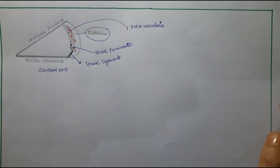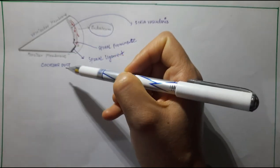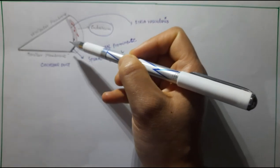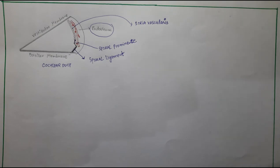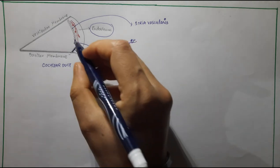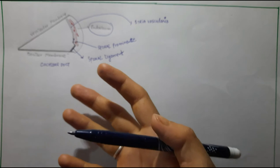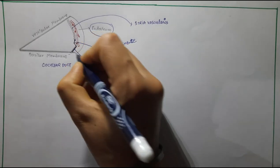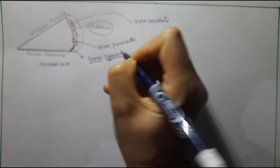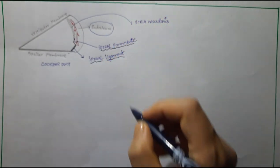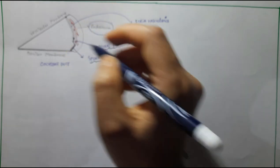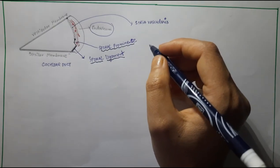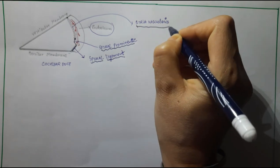हमारे पास जो outer cochlear duct है वो एक triangular structure होता है, जिसको scala media भी बोलते हैं, जिसमें organ of Corti lie करता है। इसका जो outer wall होता है वो bone का बना होता है, और इस bone में हमारे पास spiral ligament होता है, spiral prominence होती है, और vestibular membrane और spiral prominence के बीच में एक specialized epithelium होता है जिसको stria vascularis बोलते हैं।